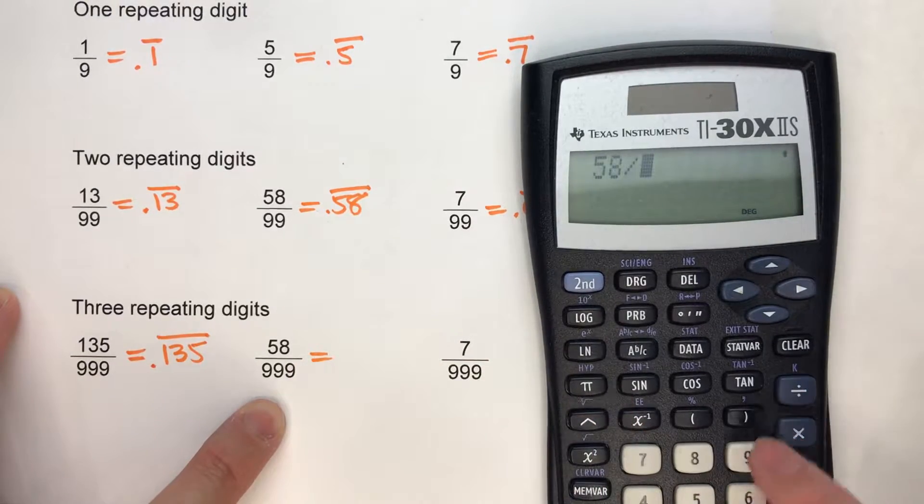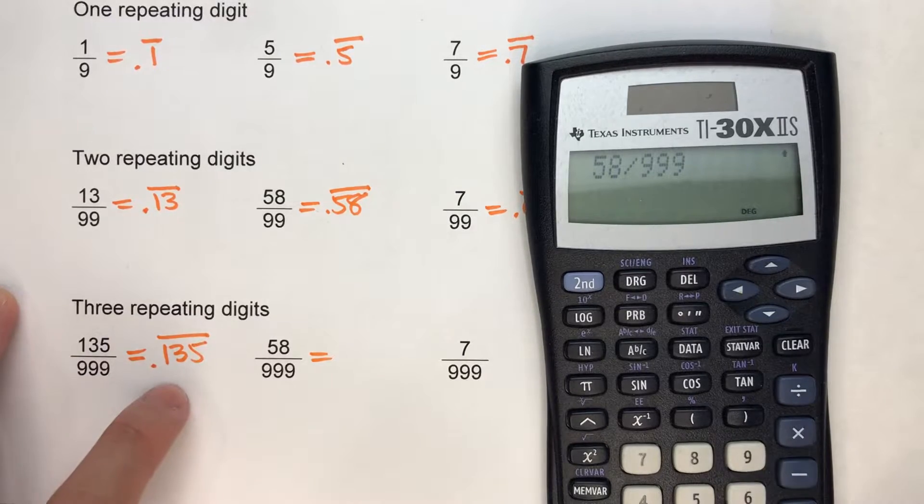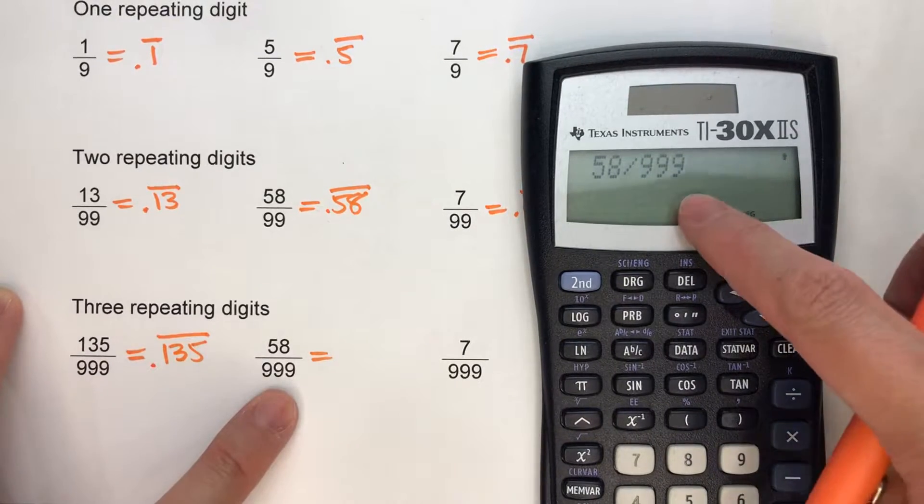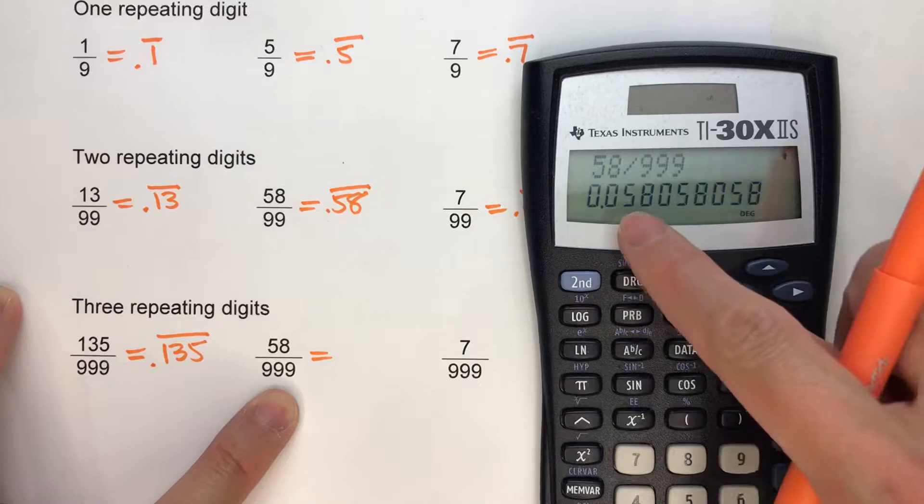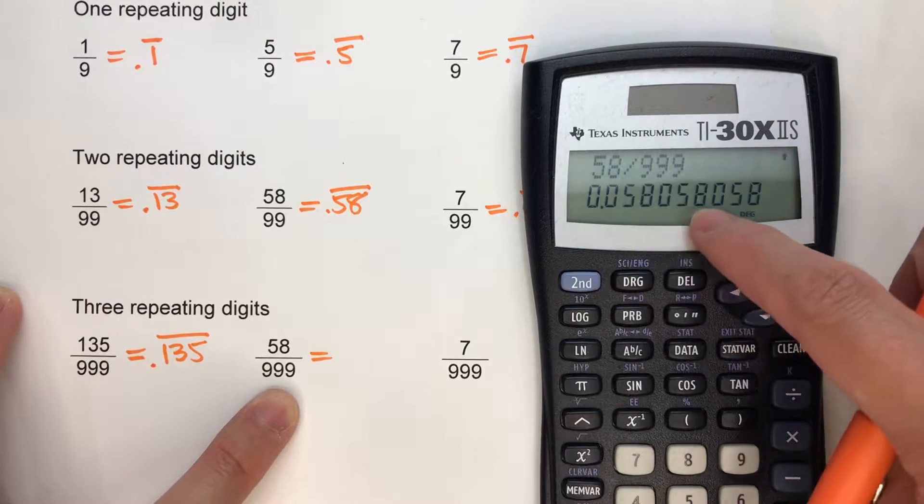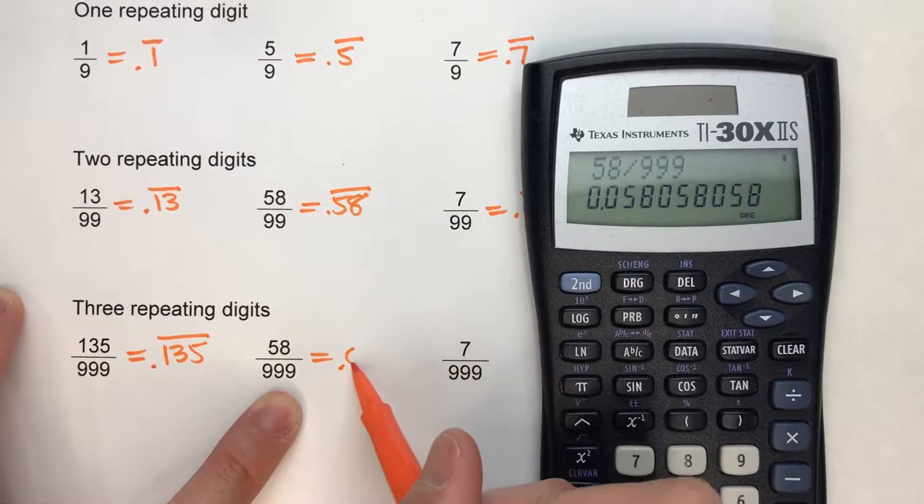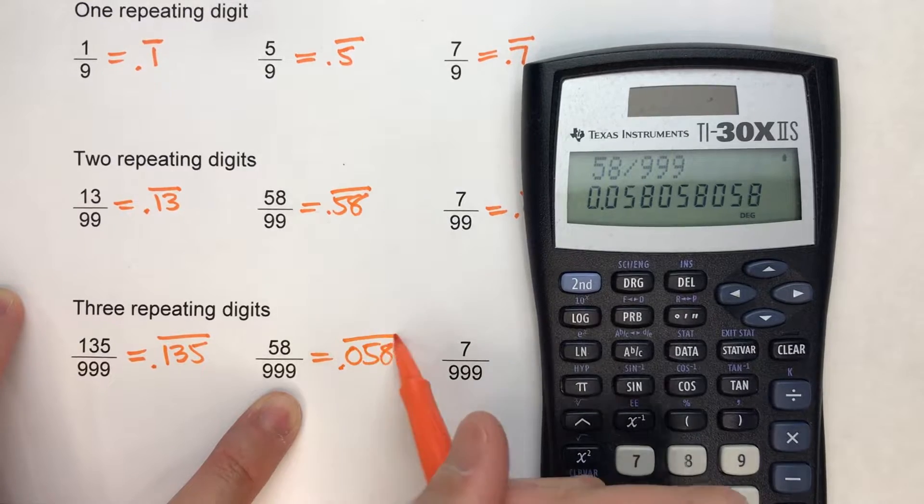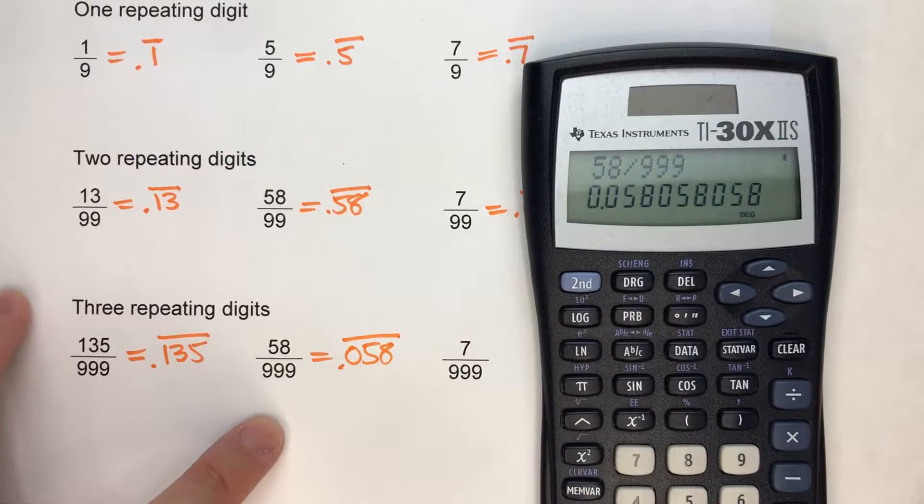58/999. Again, we have to have three repeating digits. So what do you think is going to appear? Yeah. 058, 058, 058. So 0.058 repeating.